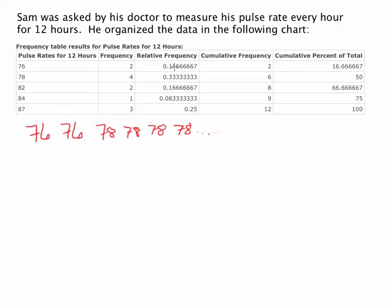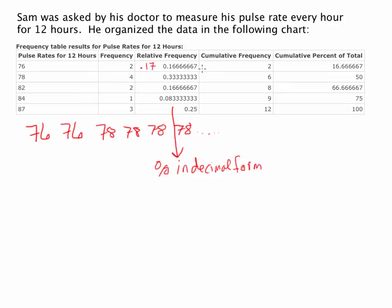The next column is relative frequency. Relative frequency is telling us information relative to the entire data set. So if we look at 76 — it occurred twice, and it has a relative frequency of approximately .17. These numbers in the relative frequency column are percents written in decimal form. So if I wanted to rewrite them as percents, .17 would be approximately 17%, and the next would be approximately 33%. It's giving us a relative measure — 76 occurred relative to all the other measures 17% of the time.